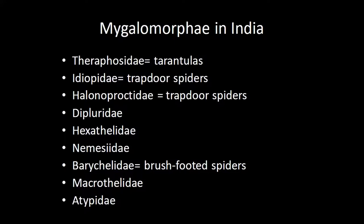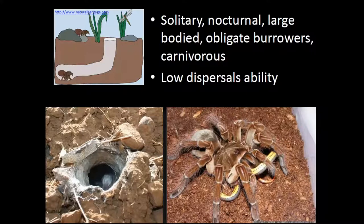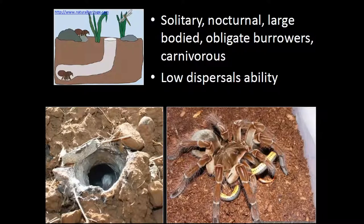Tarantulas are well known largely because during heavy monsoons when burrows get flooded they step out, and people living away from urban settings may come across these spiders. Tarantulas are burrow dwellers — many species live in deep underground burrows. Some have a lid, like the validus from Mumbai. They have low dispersal ability because their bodies cannot retain moisture for long, so they risk desiccating if they leave. They are strictly nocturnal and will not step out of their burrow unless absolutely necessary or if the burrow is flooded or destroyed.